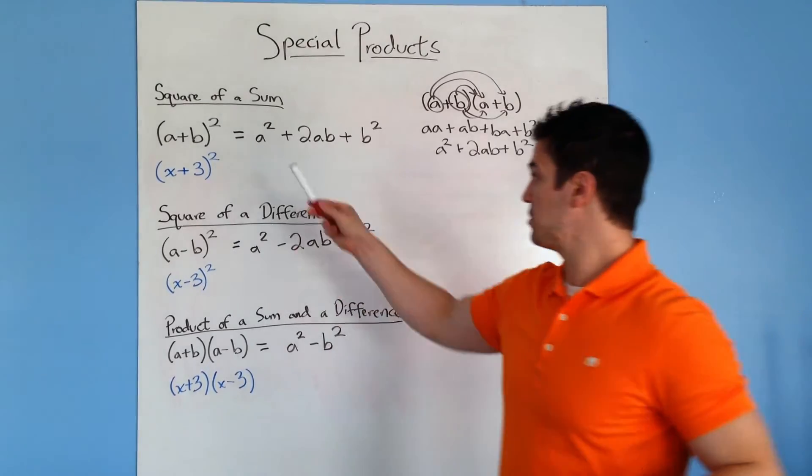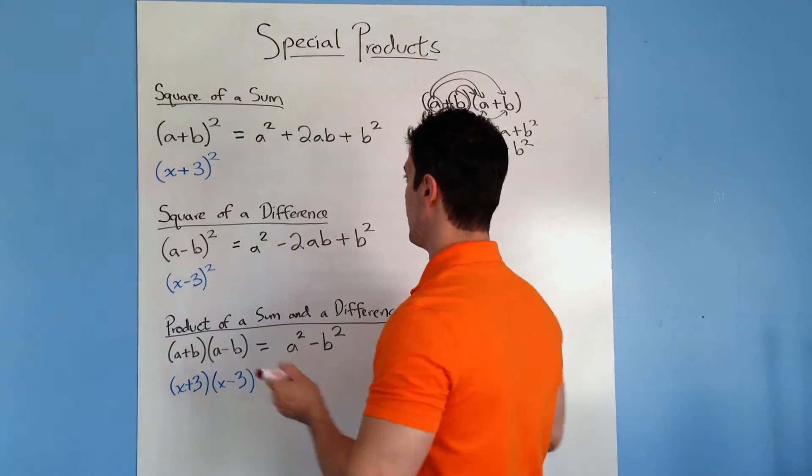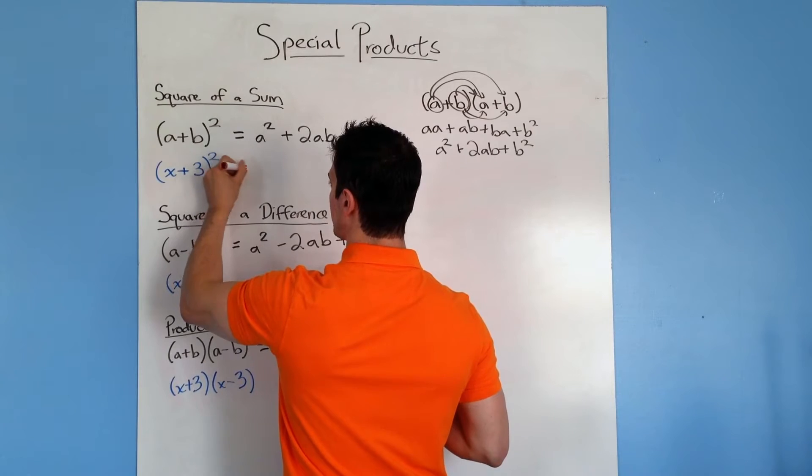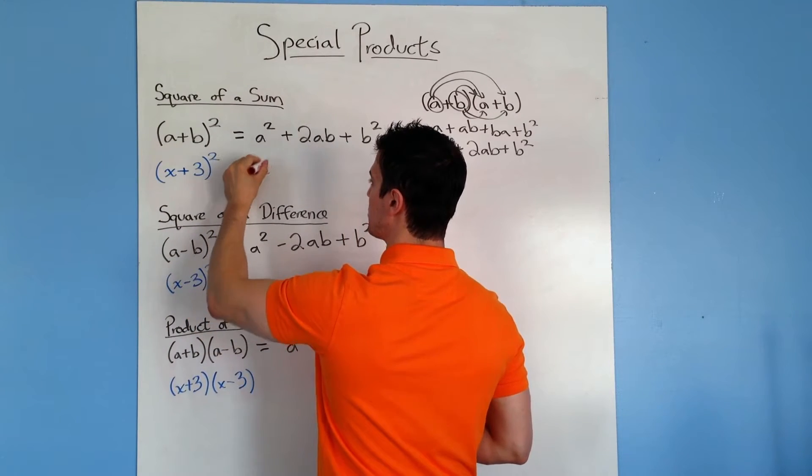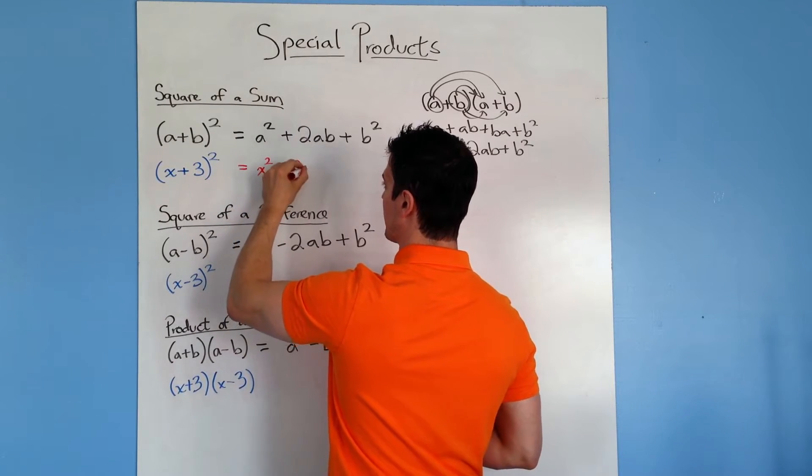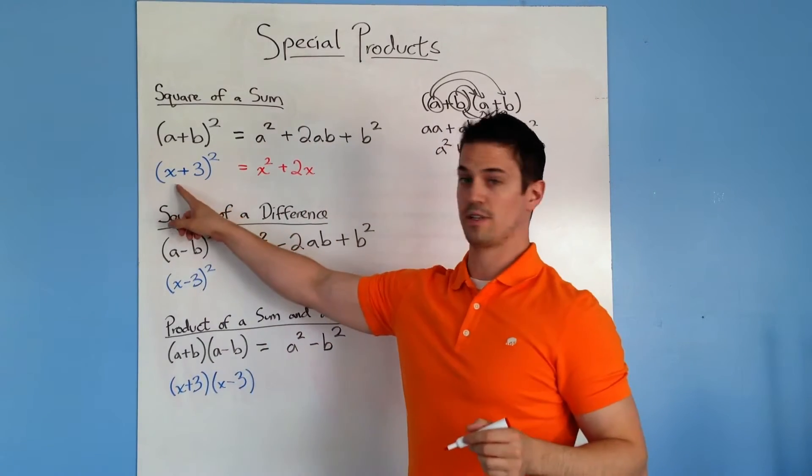So I'm going to show you how to use this shortcut using an example of x plus 3. So in this case, our a term is the x. See how it matches up with the a? So you end up with x squared plus 2 times that a term again, which is x. It's right there.